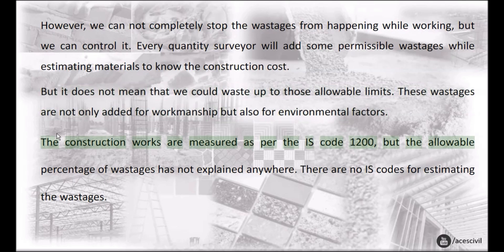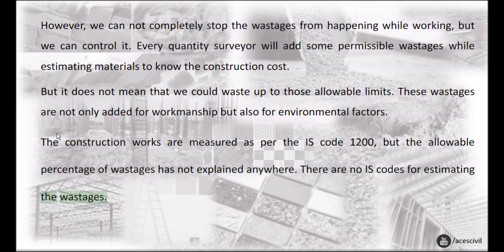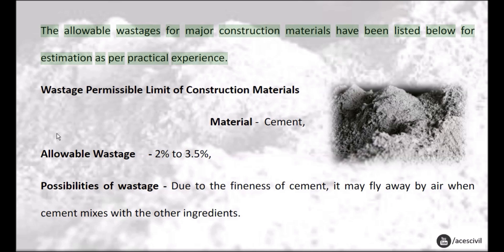The construction works are measured as per IS code 1200, but the allowable percentage of wastages has not been explained anywhere. There are no IS codes for estimating the wastages. The allowable wastages for major construction materials have been listed below for estimation as per practical experience.